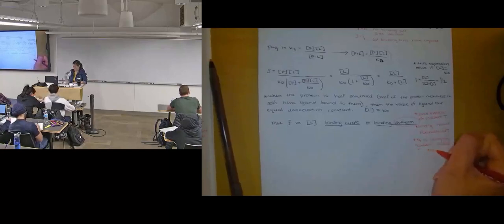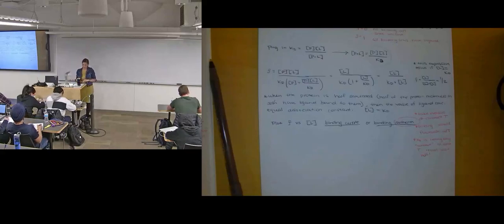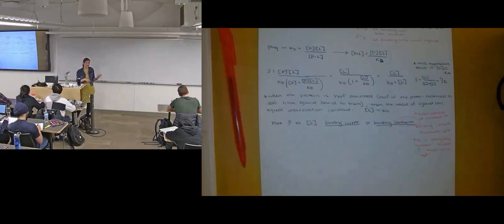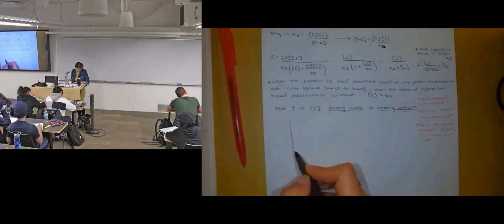It means that binding would fluctuate with T and KD is really only constant at a constant temperature. Recall the Van't Hoff situation - you could vary temperature and look at the change in equilibrium constant. Our binding curves are always going to be for a specific temperature. So we'll go ahead and draw our sample plot.